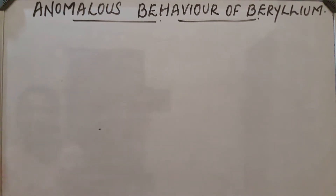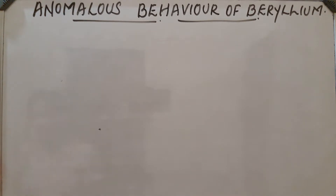Anomalous behavior of beryllium. Beryllium shows difference in behavior from the rest of the members of Group 2, and shows a diagonal relationship with aluminium because of its small size.